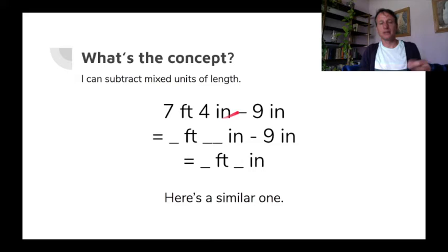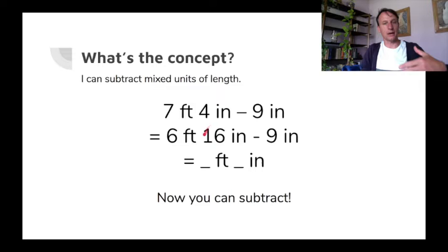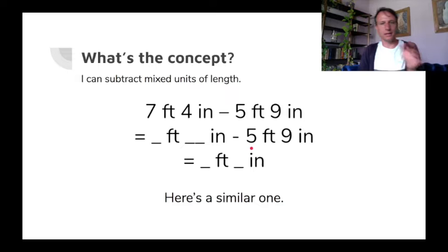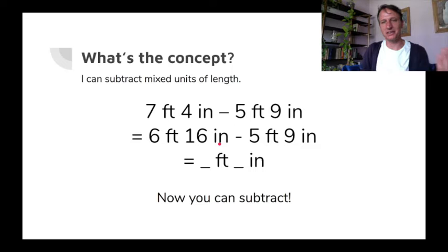Seven feet four inches: do the same thing. We leave six of those feet alone and take one out as inches, but we have to join it with the four inches already present. So the seventh foot is 12 inches plus the four inches here — 16 inches. Now we can subtract: six feet 16 inches minus nine inches. What's 16 minus nine? Seven. So six feet, seven inches. In this next one we have both feet and inches on both sides. Seven feet four inches — leave six feet alone; 12 inches plus four inches is still 16 inches. Six feet 16 inches minus five feet nine inches: six minus five is one foot, 16 minus nine is still seven inches. One foot, seven inches.